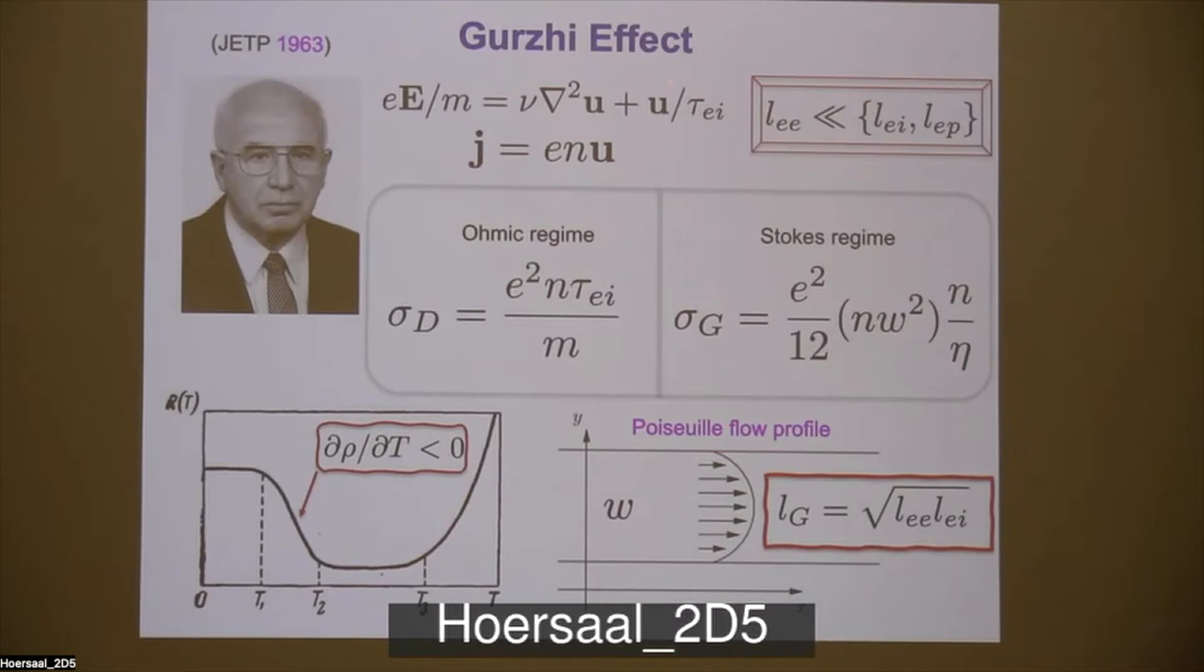So a couple of things about that, the competition between these two terms gives a natural length scale in the problem, which is called the Gurzhi length. It can be expressed as a geometrical mean between the electron-electron mean-free-path and electron-impurity mean-free-path. Bulk regime is when the width of the channel is much bigger than Lg, so then you are in ohmic regime. And when W is smaller than Lg, then you are in a Stokes regime.